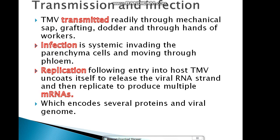Transmission of TMV occurs by different methods. First, by mechanical sap transmission — infected plant sap infects the leaves of other plants. Second, by vegetative propagation and reproduction. Third, through grafting — when two plants are joined, the virus can pass from one to the other. It can also spread through parasitic plants.